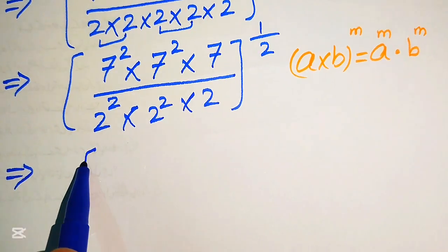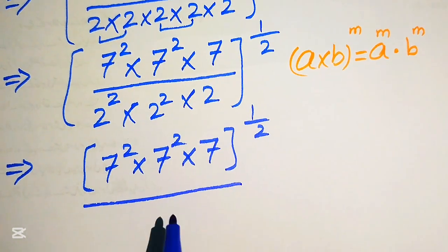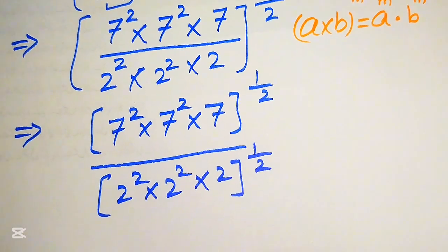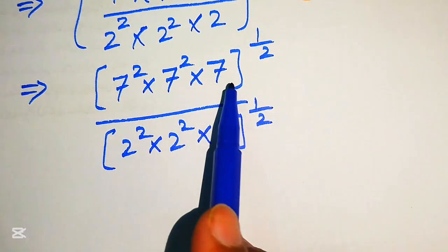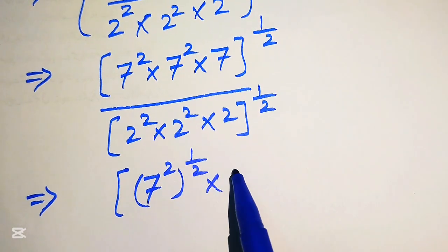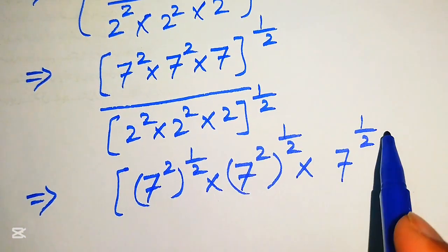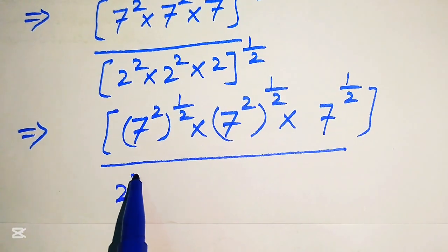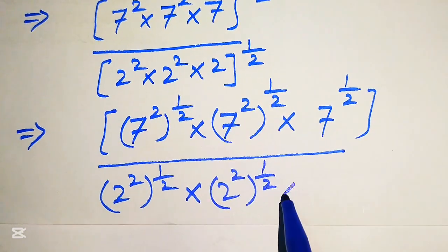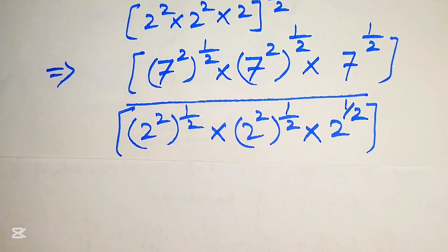Applying 1 over 2 to the numerator gives (7 squared) to the power of 1/2 × (7 squared) to the power of 1/2 × 7 to the power of 1/2. For the denominator: (2 squared) to the power of 1/2 × (2 squared) to the power of 1/2 × 2 to the power of 1/2.